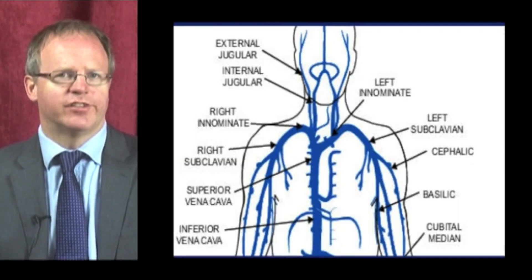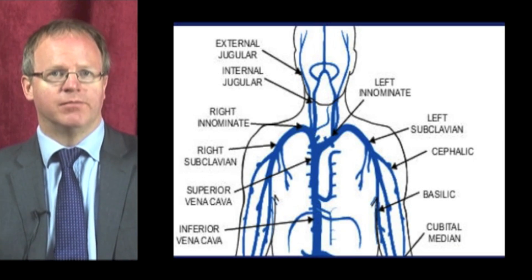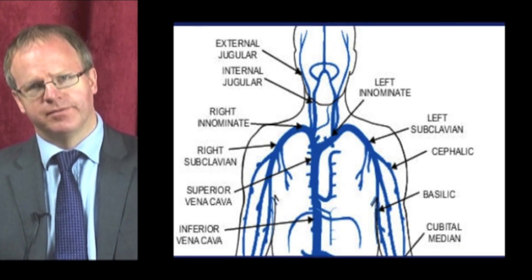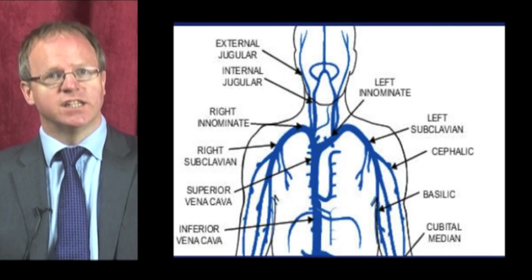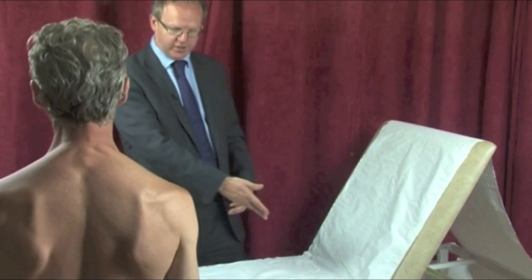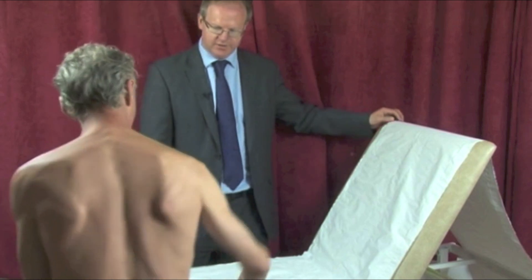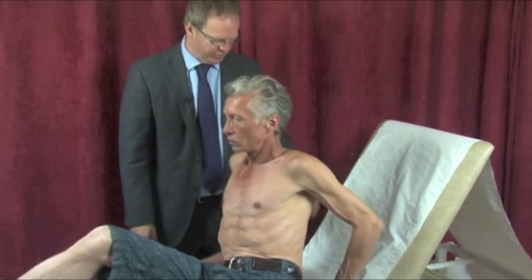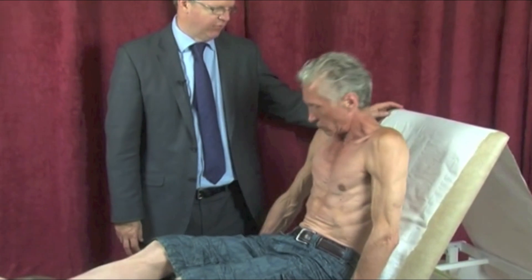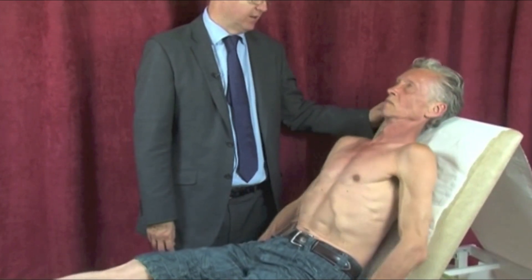The JVP is used to assess the right atrial pressure and to look at the right heart hemodynamics. Consideration needs to be given to the height of the impulse and its waveform. As the JVP varies according to the position of the patient, this needs to be standardised. By convention, the patient should be sitting with their legs flat and the back at an angle of 45 degrees. To allow relaxation of the neck muscles, the patient should have the head supported and turned approximately 30 degrees away from the observer, usually to the left, as the right internal jugular is easier to assess as it is straighter.